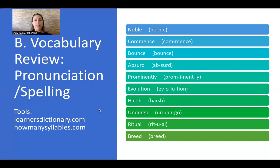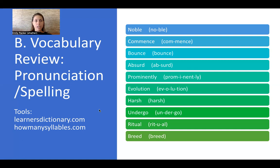The next word is 'prominently.' Prominently has four syllables: prom-i-nent-ly. Prominently means something that is easy to be recognized. For example, you could say the Empire State Building is prominently featured on the New York City skyline, or 'She is a prominent teacher at the school — everybody recognizes her.'